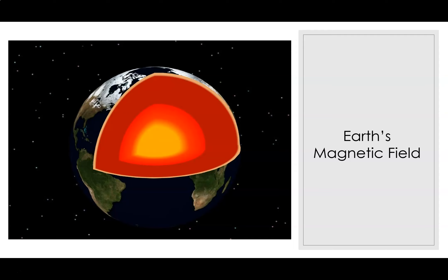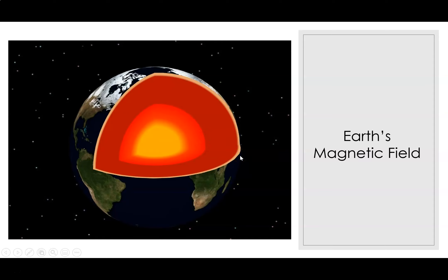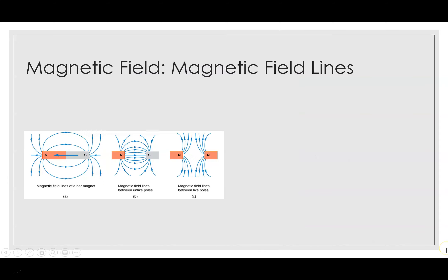There is some evidence that the strength of a planet's magnetic field is related to its rate of rotation. For example, Jupiter rotates faster than Earth, and recent space probes indicate that Jupiter's magnetic field is stronger than Earth's even though Jupiter lacks an iron core. The direction of Earth's magnetic field reverses every few million years, with evidence from iron-containing rocks from volcanic activity on the ocean floor.